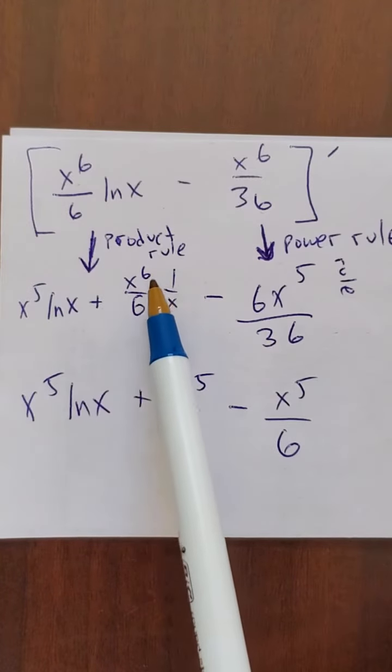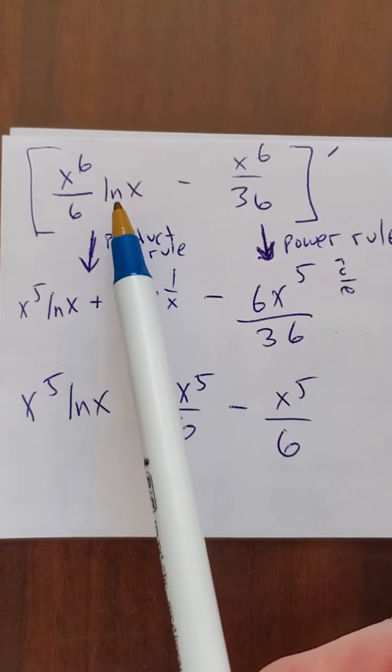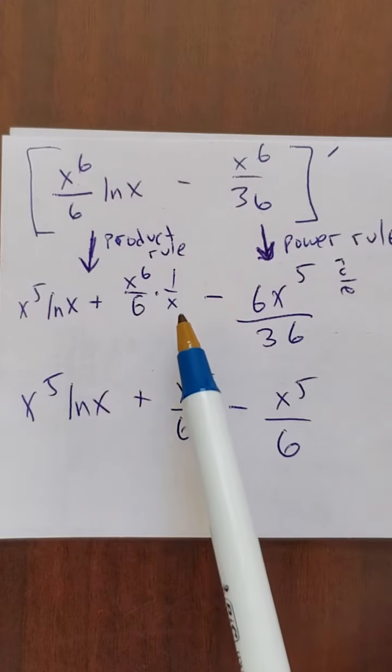Then I take x to the 6th over 6, that's the product rule, times the derivative of the second function, which is 1 over x.